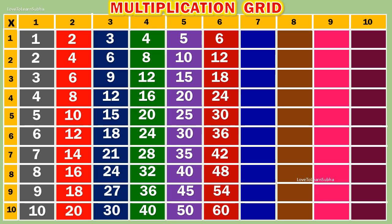Table of 7. 7 1s are 7. 7 2s are 14. 7 3s are 21. 7 4s are 28. 7 5s are 35.